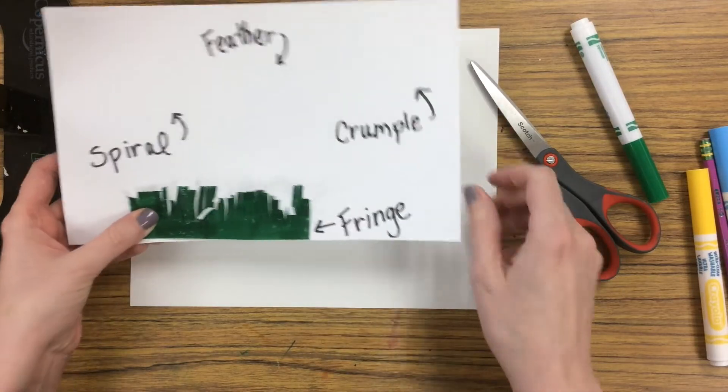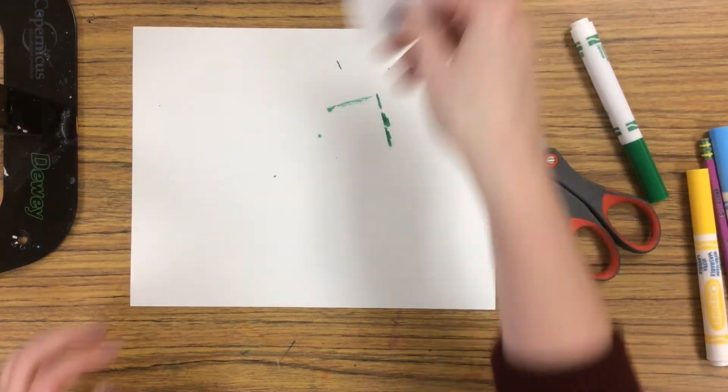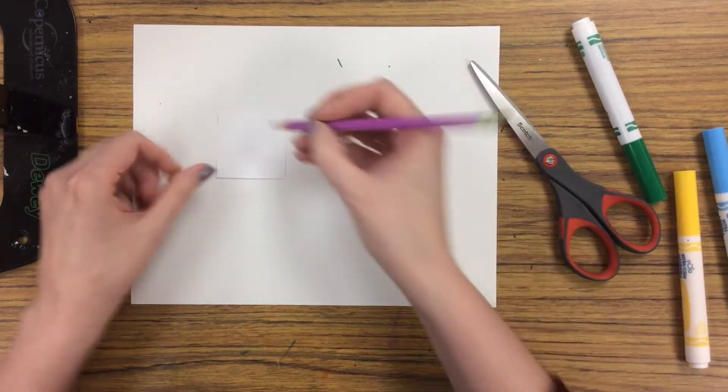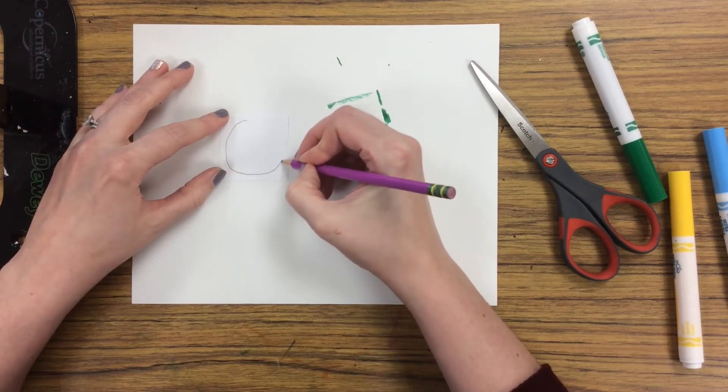Next let's learn how to do a spiral. So to do a spiral, take a small piece of paper and grab your pencil and lightly sketch out a circle. It does not need to be perfect.